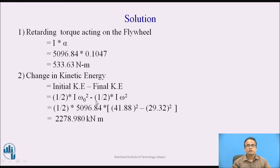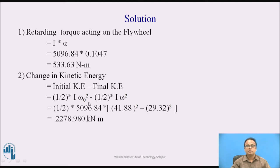Let us work out the results one by one. The retarding torque acting on the flywheel is given by I into alpha: 5096.84 multiplied by 0.1047, giving retarding torque as 533.63 Newton meter. For change in kinetic energy, we subtract final kinetic energy from initial kinetic energy: half I omega 0 squared minus half I omega squared. After substituting omega 0 and omega, we get change in kinetic energy as 2278.90 kilojoule.